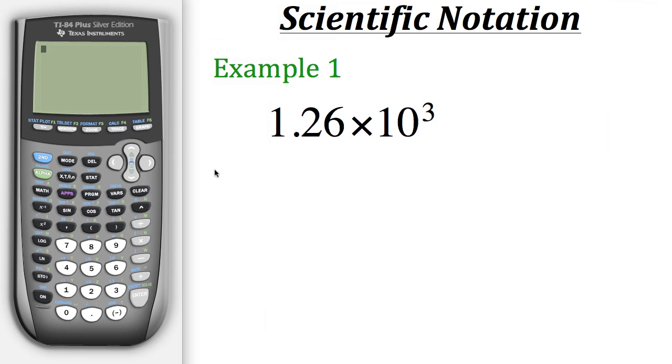We would normally just do the 1.26 and then times 10 raised to the third power, giving us 1260 as a result. Now there's actually a simpler way to do this on the calculator rather than doing the times 10 raised to the third power.